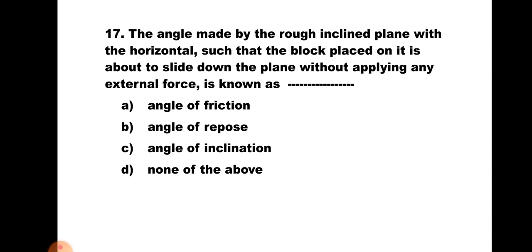Question number seventeen: The angle made by a rough inclined plane with the horizontal such that a block placed on it is about to slide down without applying any external force is known as — a) Angle of friction, b) Angle of repose, c) Angle of inclination, d) None of the above. When a block starts sliding down without any external force, the angle made by the inclined plane with the horizontal is known as angle of repose. Hence the correct answer is b) Angle of repose.